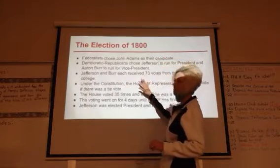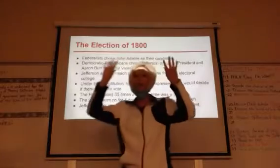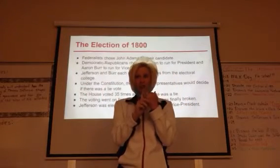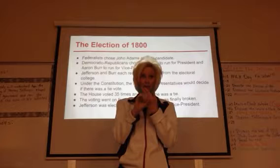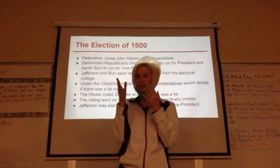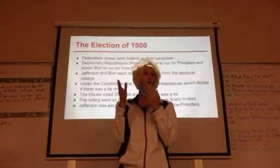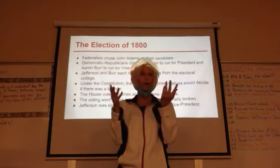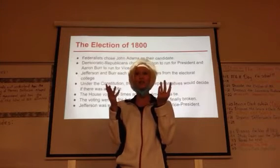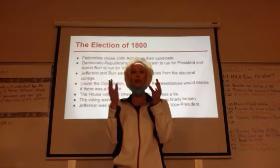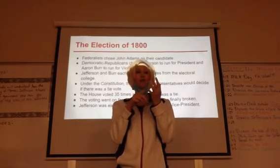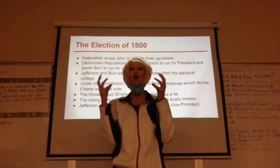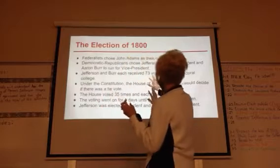Jefferson and Burr — remember how it works: whoever receives the most electoral votes wins, and the second most becomes vice president. So in the last election we wound up with a Federalist president and a Democratic-Republican vice president. Well, this time the Democratic-Republican nominee for president and nominee for vice president will tie with 73 electoral votes.